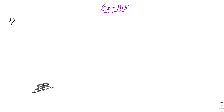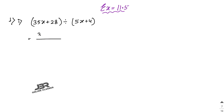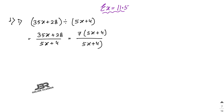Sum number 1: work out the following division. First one — (35x + 28) divided by (5x + 4). Write it in fraction form: (35x + 28) over (5x + 4). From the numerator, 7 is common, giving 7(5x + 4) over (5x + 4). The (5x + 4) terms cancel out, so the answer is 7.